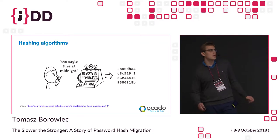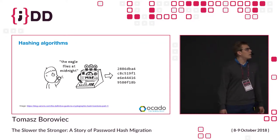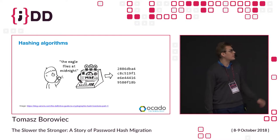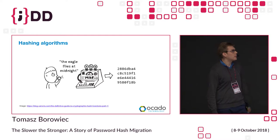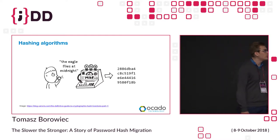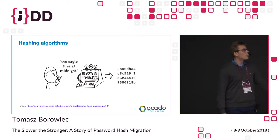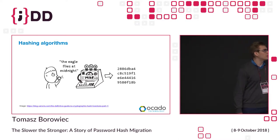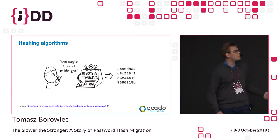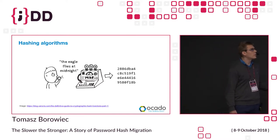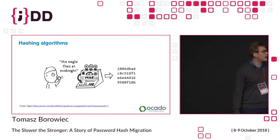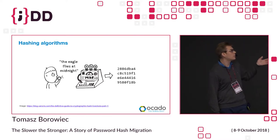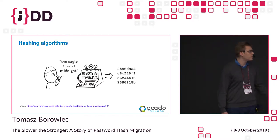So, hashing algorithms. I think every single one of you has used something like MD5. You have an input — for example, the string "the eagle flies at midnight" — and you run it through MD5, and you get a one-way hash. There is no possibility to do the process backwards. The only way to know whether this hash is correct is to run MD5 again and compare the results.